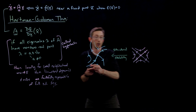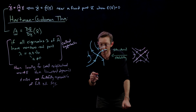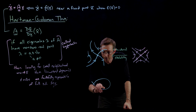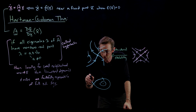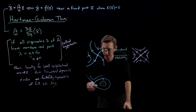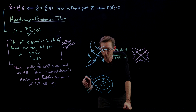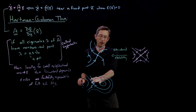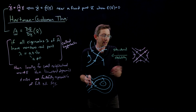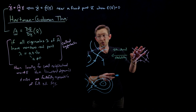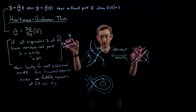Away from that fixed point, all bets are off. I could have a saddle point that does something funky, and there could be a strange orbit elsewhere. But zoomed into that fixed point, structurally it's going to look like the linearization for these hyperbolic fixed points.